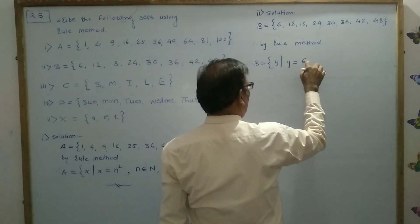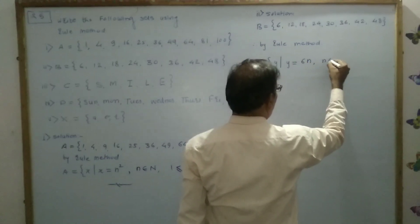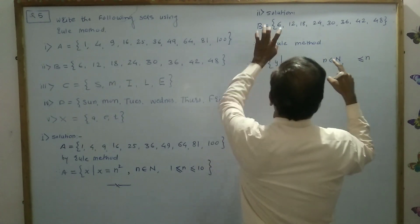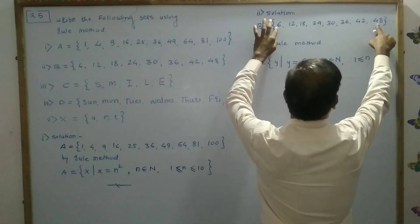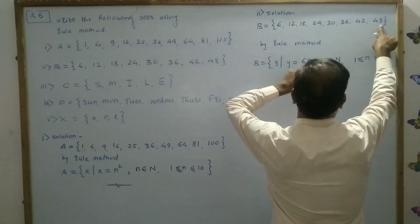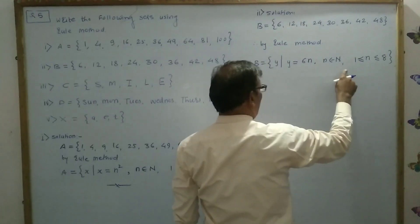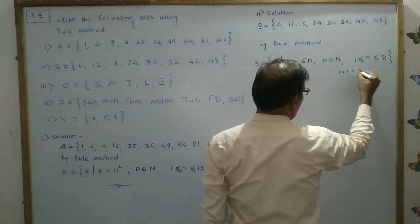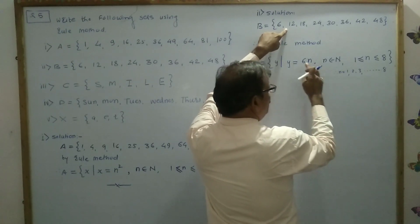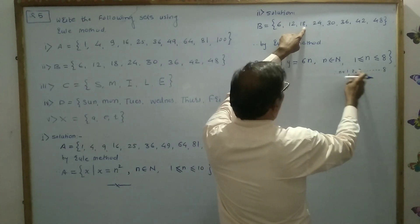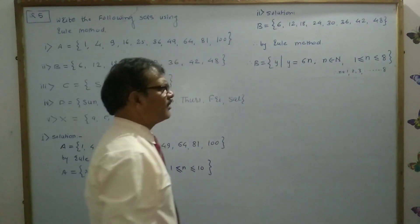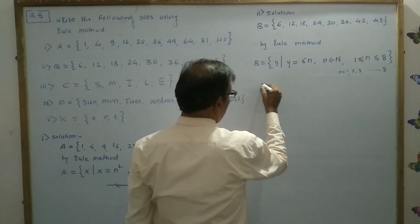This is the multiple numbers — the 6 times table. So take value N belonging to the set of natural numbers, and the value of N lies from 1 to 8. When we take the value of N as 1, 2, 3 up to 8 and put them in 6N, we get 6, 12, 18, 24, 30, 36, 42, 48. In this way we can write the set by rule method. This is your answer.